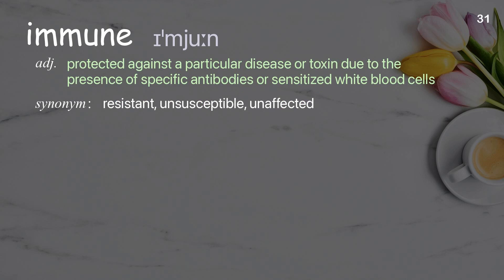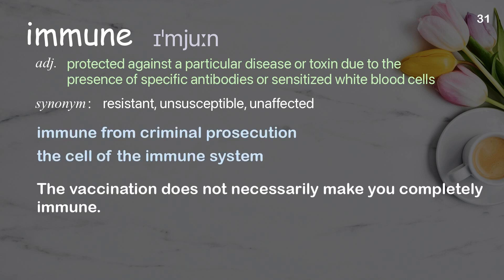Immune: protected against a particular disease or toxin due to the presence of specific antibodies or sensitized white blood cells. Examples: immune from criminal prosecution, the cell of the immune system. The vaccination does not necessarily make you completely immune.